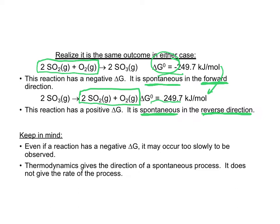No matter how we write this equation we still have the same outcome. We will always see SO2 and O2 going to form SO3 favored by a negative delta G. That is the spontaneous direction of the reaction. So that's one big point from this section.